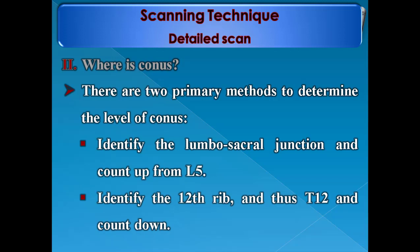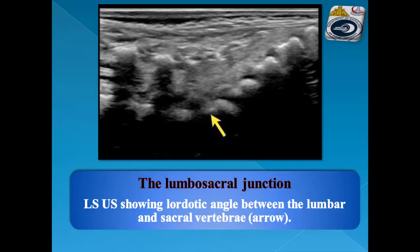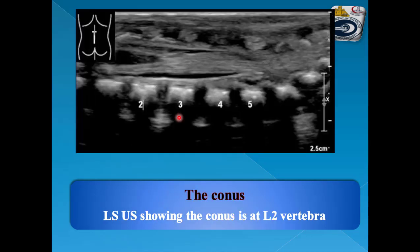To identify the lumbosacral junction: on the LS image of the ultrasound, look for the lordotic angle between the lumbar and sacral vertebrae. This is the arrow — this is L5 and this is the lumbosacral junction. Another example: the angle between the lumbar vertebra and the sacral vertebra is used to count. Here the conus is at L2 vertebra.